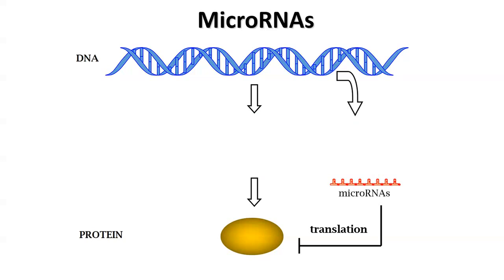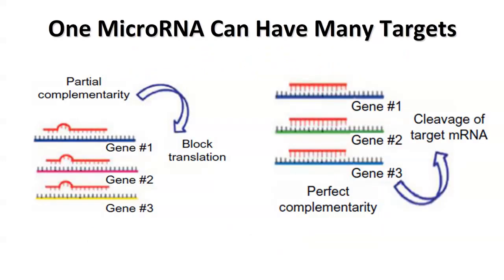One microRNA can actually have many different targets. Research has found that if a microRNA binds with partial complementarity to its target, it tends to block the translation of that messenger RNA into protein, whereas if there's perfect complementarity between the microRNA and the target gene, that messenger RNA gets cleaved.